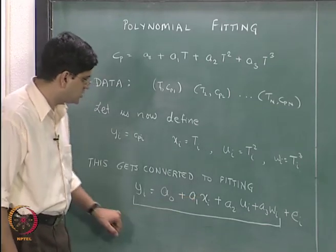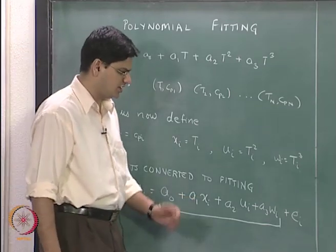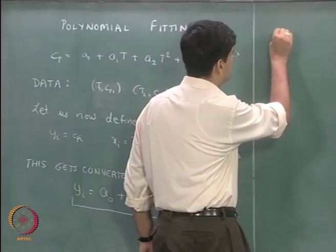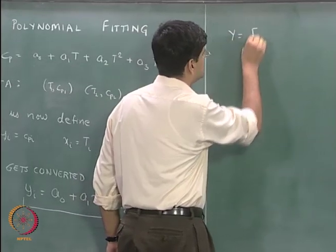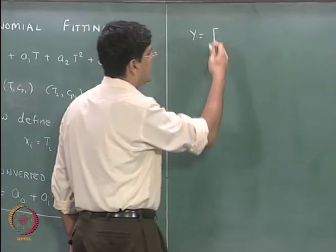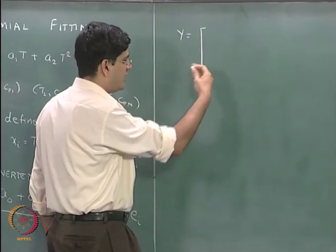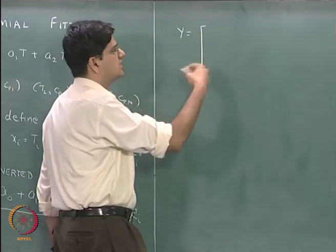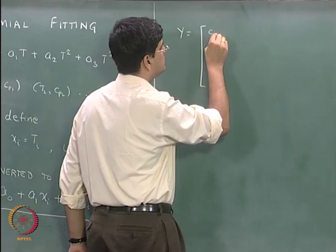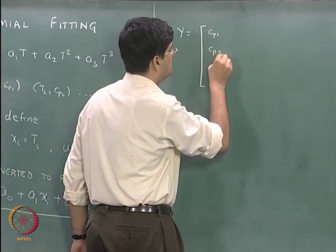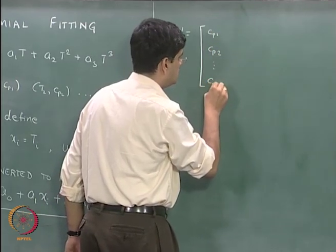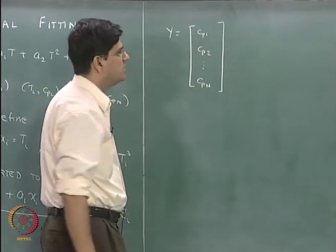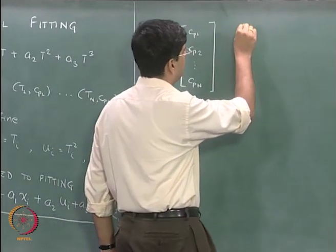Let us see what we get in the multilinear regression case for this particular model. For this model, the matrix Y was defined as y1, y2, and so on up to yn. Y, recall, is nothing but Cp. So we have Cp1, Cp2, and so on up to Cpn — that is going to be our vector Y.